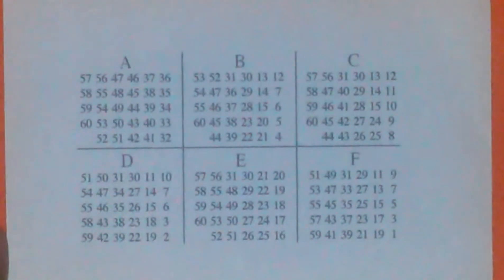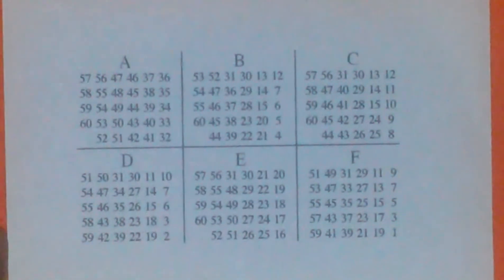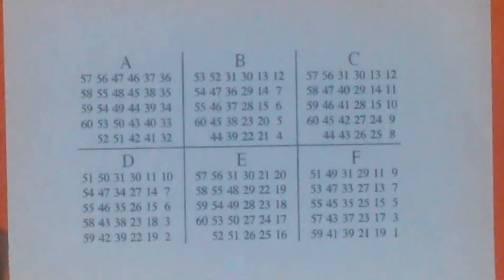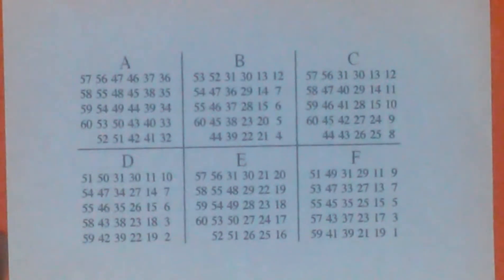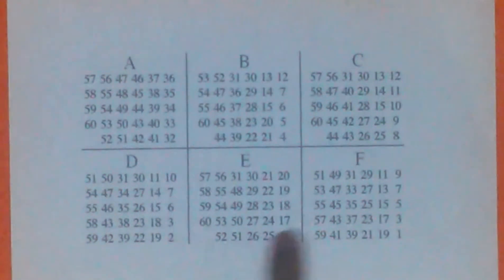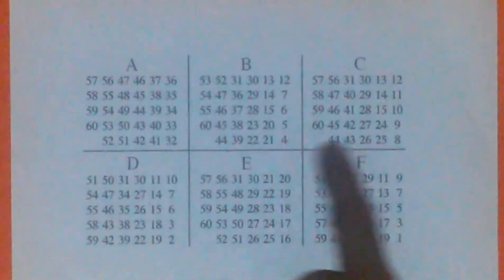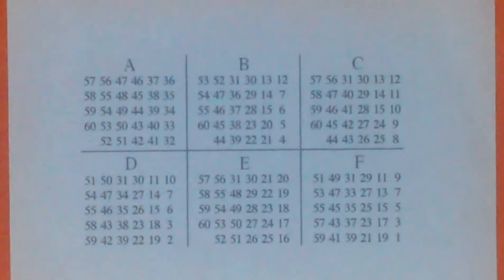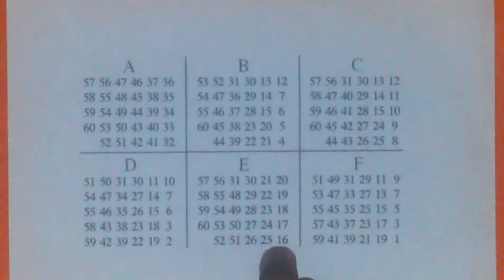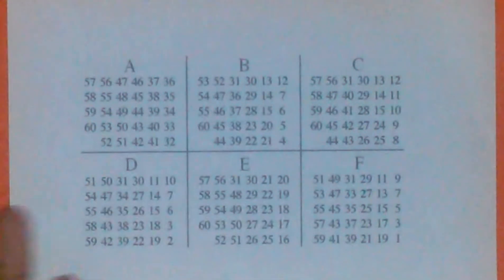And then I try again, so I say okay, to another spectator, say they pick number 21, and their column is in B, E, and F. All you just do is add up 4 plus 8, plus 16, plus 1. 4 plus 8 is 12, plus 1 is 13, plus 16 is 20.